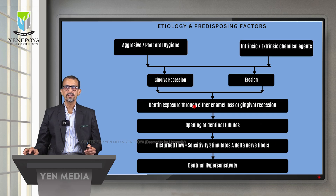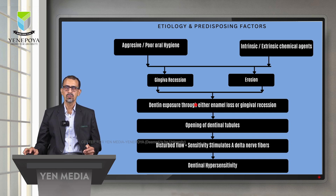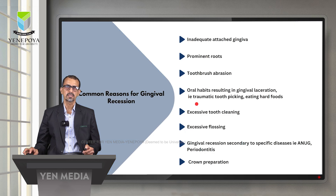Regarding etiology and predisposing factors, both aggressive and poor oral hygiene can initiate dentinal sensitivity. Intrinsic or extrinsic chemical agents may cause gingival recession or erosion, and subsequent dentinal exposure through enamel loss or gingival recession can open up the dental tubules, disturb the flow of fluid, and stimulate A-delta nerve fibers, thereby causing dentinal hypersensitivity.